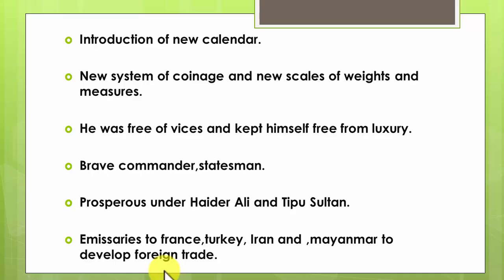Though Tipu Sultan was a great soldier and daring commander like his father Haider Ali, there was a huge difference between the two. Haider Ali never made mistakes in assessing one's character, and he took up a weak and divided Mysore and built it into a strong state. Tipu, on the other hand, inherited a powerful state but not only weakened it but also lost it. However, the common point was that both wanted to destroy the English foothold in India.